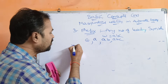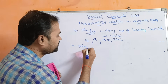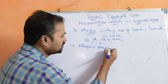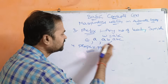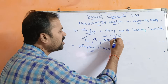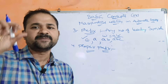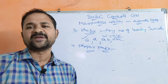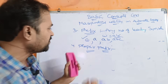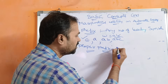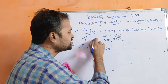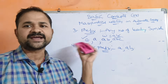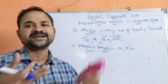Now let us see the proper prefix of a string. A proper prefix means all prefixes except epsilon and the complete string itself. So if the string is ABC, the proper prefixes are A and AB — we cannot take epsilon or the complete string ABC.